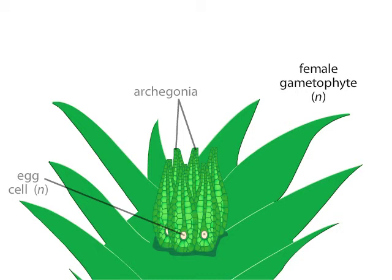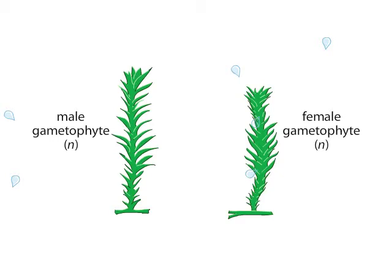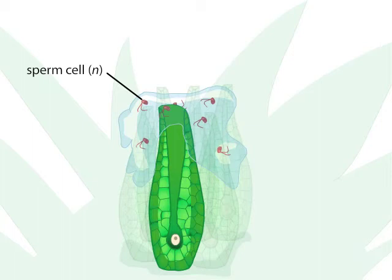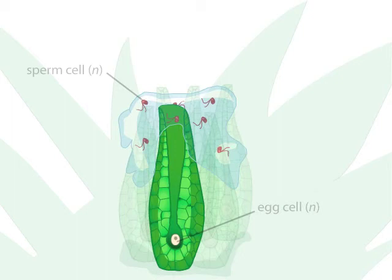The sexual reproduction of a moss requires water, which is one reason mosses are typically found in moist environments. Sperm cells require water for transport to egg cells. Once in the vicinity of an egg, a sperm cell swims to the egg and fertilizes the egg by fusing with it.